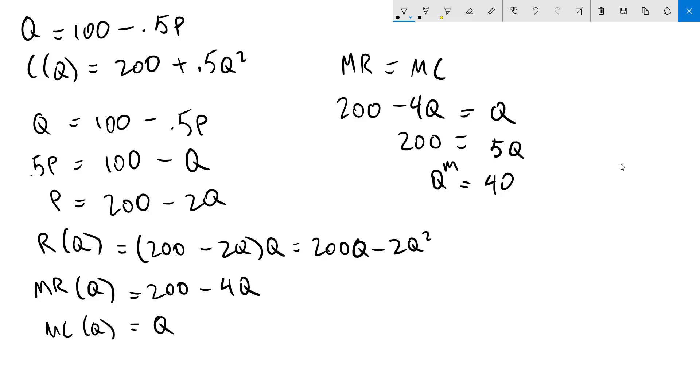To get the price I will substitute my monopoly quantity into the inverse demand function that we saw right here. Monopoly price will be 200 minus 2 times 40 which is 120. And that is how to figure out the profit maximizing quantity and price for a monopoly.